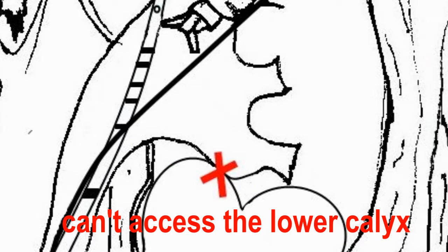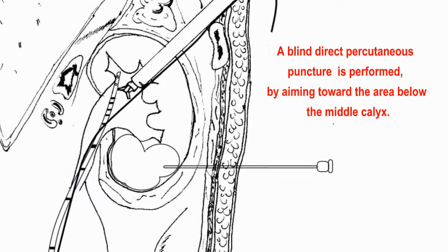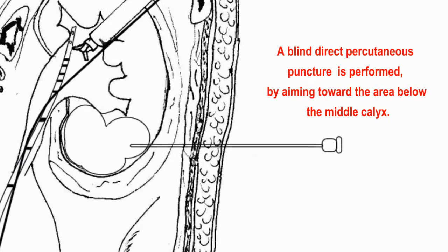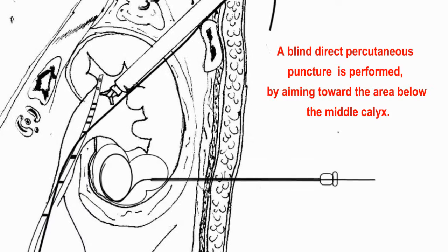A blind direct percutaneous puncture is performed by aiming toward the area below the middle calyx.